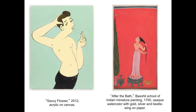This painting on the left, Saucy Flosser, pulls directly from 17th and 18th century miniature painting from the Punjab hills of India, an example of which is on the right. It's also a play on the motif of a lady at her toilette, albeit a slightly comic one.